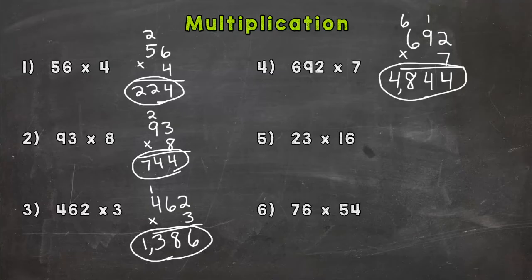Number 5, we have a 2-digit by 2-digit, so we set it up as 23 times 16. Now this one's going to be a little different than the previous 4, because we have 2 digits that we're multiplying by. So we first need to start by multiplying the 6 times 3 and then 6 times 2. It's the same exact stuff we've been doing. So 6 times 3 is 18.